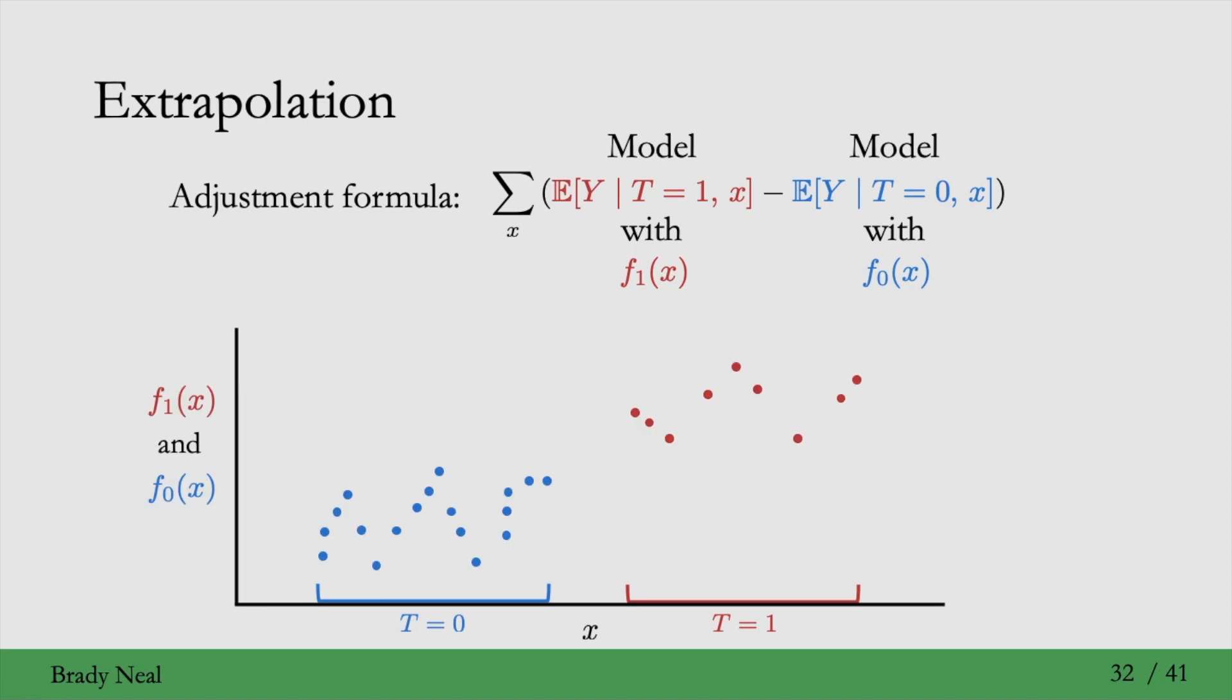Then if I add some data here—so what are these points? The blue points on the left are the control group, and the vertical distance is their value of Y. And the red group on the right is the treatment group, and the vertical distance is the value of Y. These are color-coded because the control group will be fit with the f₀ model, and the treatment group will be fit with the f₁ model. But importantly, we have to sum over all x for both of these models, as you can see in the adjustment formula.